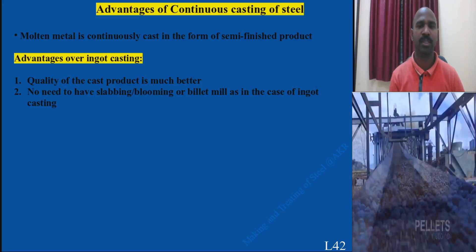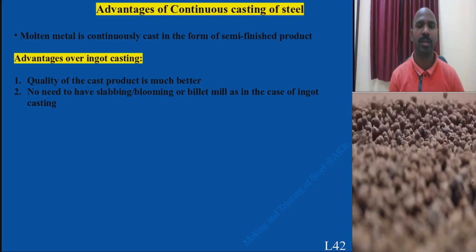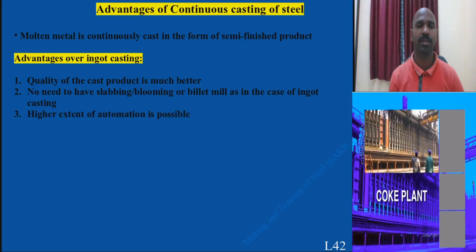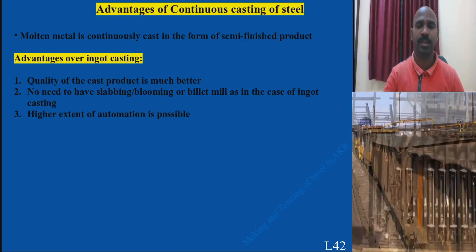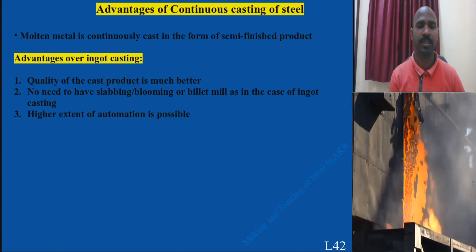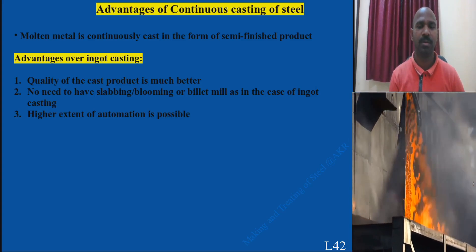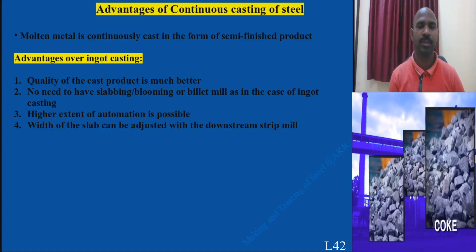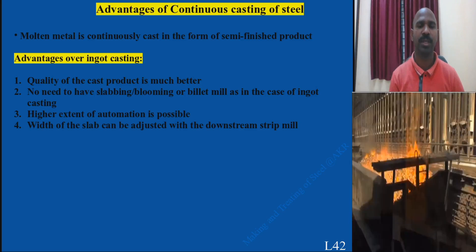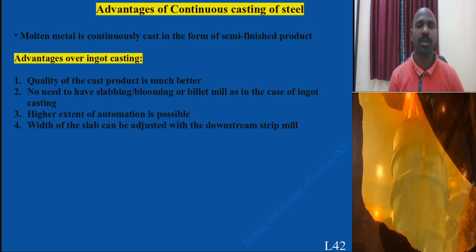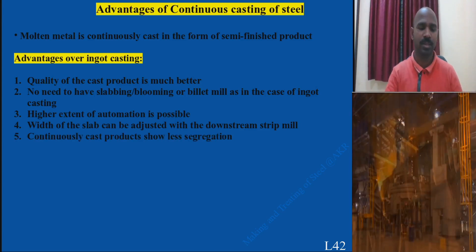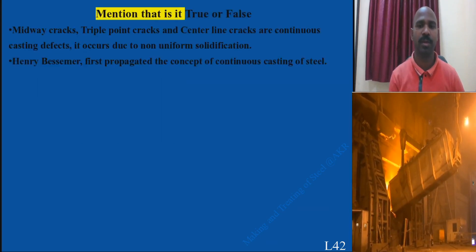Nowadays, around 95% of plants are equipped with the continuous casting process. It offers higher automation — stripping, cutting, periodic cutting, regular section production, and smoothening can all be automated. The width can also be adjusted as needed, making products closer to finished dimensions. This process is no longer considered to produce just semi-finished products, and it results in less segregation.